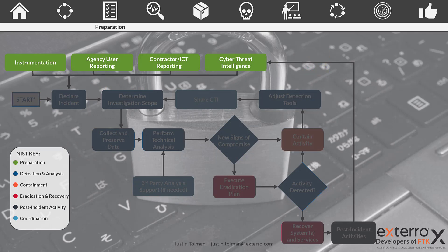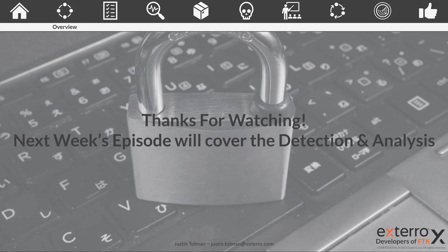Those points are an overview of the preparation phase of the CISA incident response playbook. Again, this should be happening before the breach. Of course, as breaches happen, this will adjust the way that you prepare for the next one. These documents, procedures, plans, hierarchies, and training should be an ever-evolving process based on the cyber threat intelligence landscape at the time. For more information, you can reference the Incident and Vulnerability Response Playbook published by CISA. Next week, we'll be moving on to the detection and analysis phase and how you can apply it to your agency to protect and react appropriately to breaches.